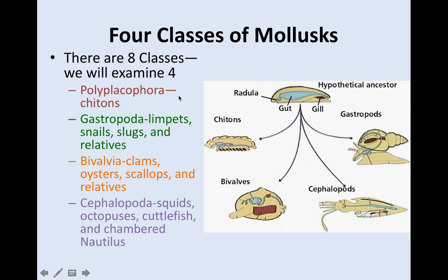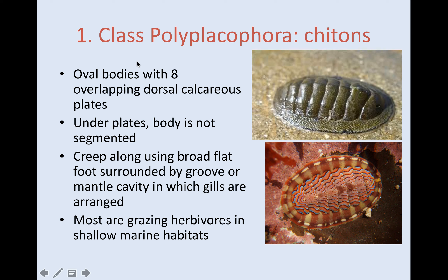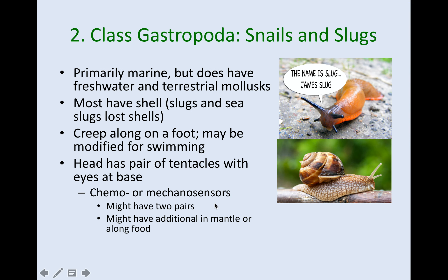There are actually eight classes of molluscs, but I'm going to focus on four: the chitons, the gastropods, bivalves, and the cephalopods. Polyplacophora — the chitons — have oval bodies with eight overlapping dorsal plates. Under the plates, the body is not segmented and just creeps along as it moves. They're grazing herbivores that live in shallow marine habitats.